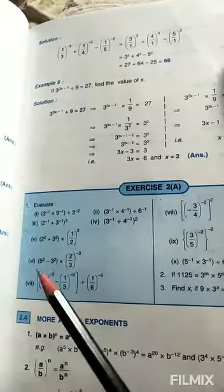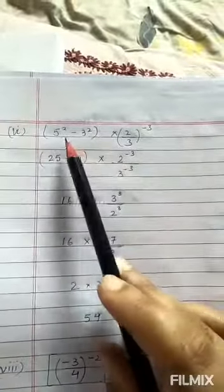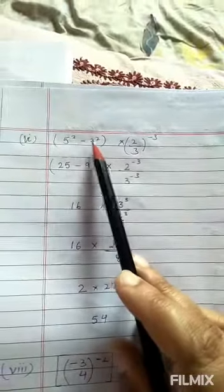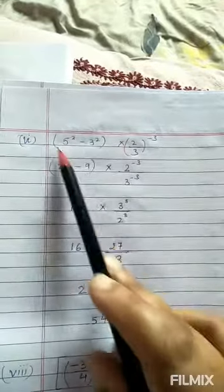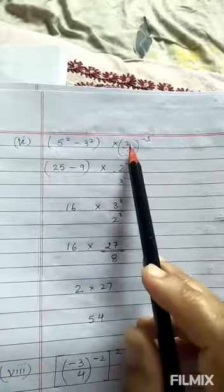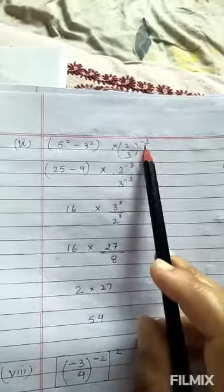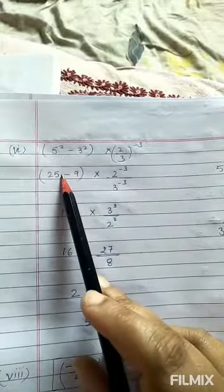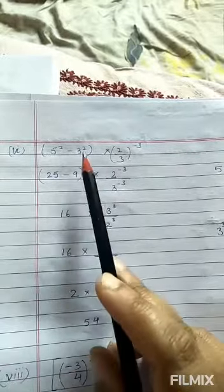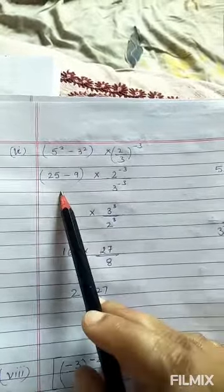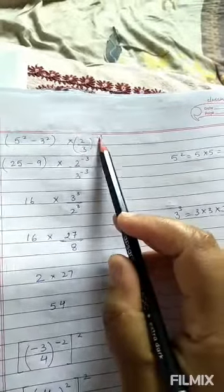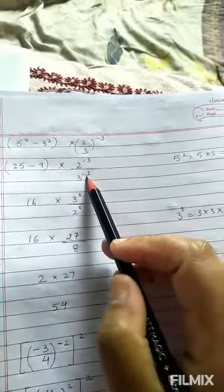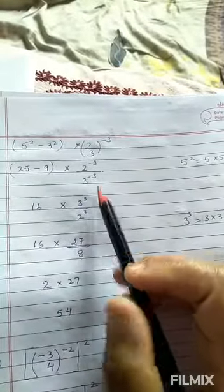Part 6: 5 to the power 2 minus 3 to the power 2, in bracket, multiplied by 2 upon 3 raised to the power minus 3. Now 5 fives are 25 minus 3 threes are 9, 9 in bracket. And this, open the bracket, this minus 3 on this also and on this also. Now to make them positive.